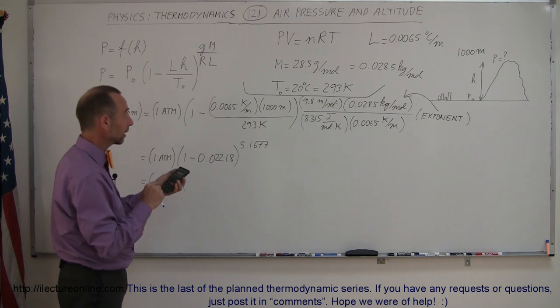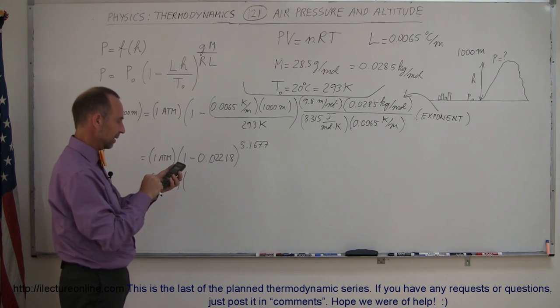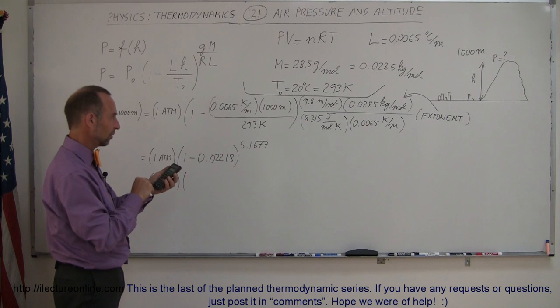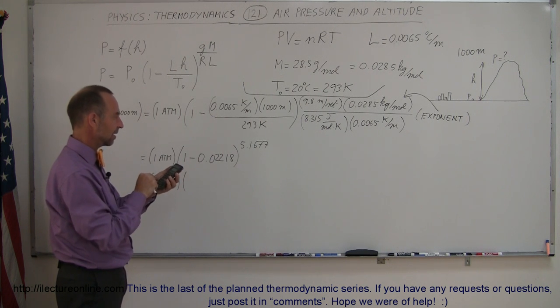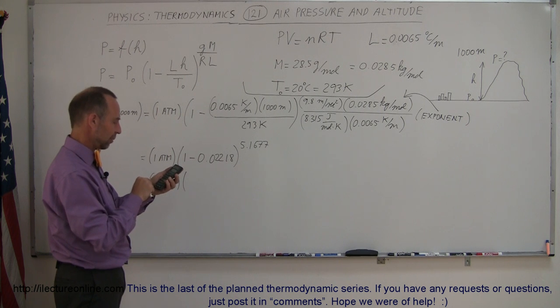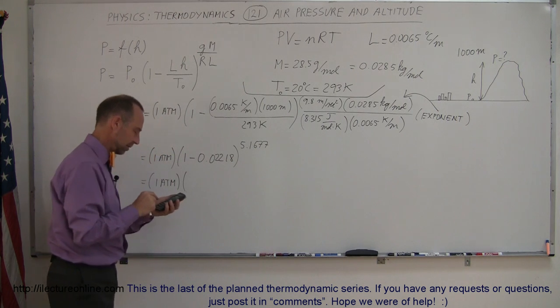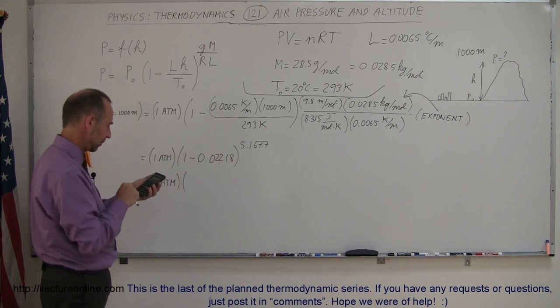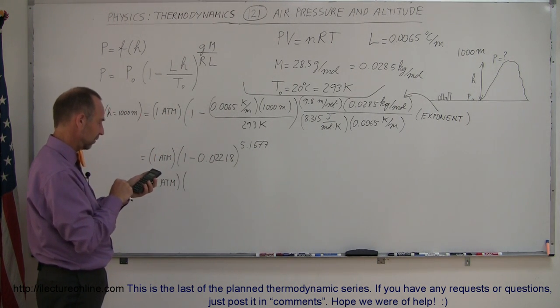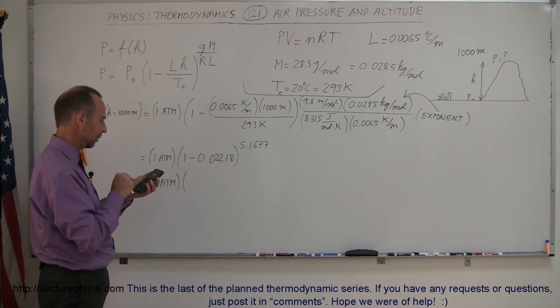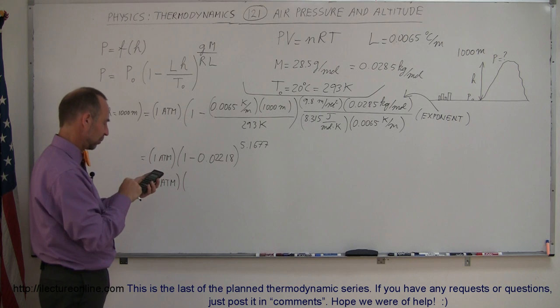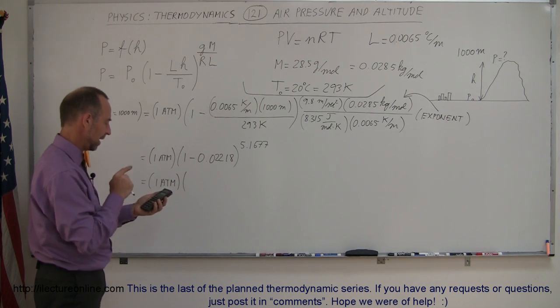So let me work out the exponent separately here. So 9.8 times 0.0285, divided by 8.315, divided by 0.0065, equals. Yes, that's correct. So if I now take that, so we have 1 minus 0.02218, equals, and then raise that to the exponent, 5.1677, equals. Ah, much better.